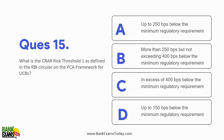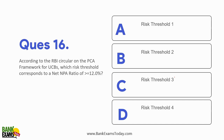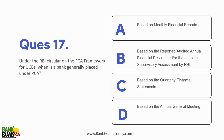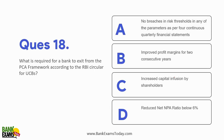The CRAR Risk Threshold 1 as defined in the RBI circular is up to 250 basis points below the minimum regulatory requirement of 12%. Net NPA of more than 12% corresponds to Risk Threshold 3. A bank is generally placed under PCA based on the reported audited annual financial results or ongoing supervisory assessment by RBI. To exit the PCA framework, there must be no breaches in the threshold in any of the parameters as per four continuous quarterly financial statements.